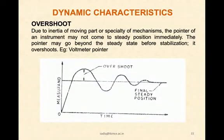Overshoot is another characteristic. Due to inertia of moving parts or special reasons, the pointer of an instrument may not come to steady position immediately. You might have seen this in voltmeter, where when connected to a circuit, the pointer will oscillate first, then come to rest. There is an overshooting that happens and finally it will be stabilizing to the required position.